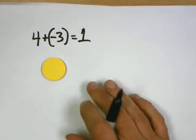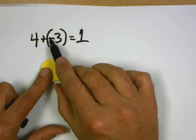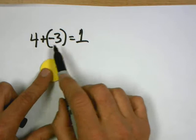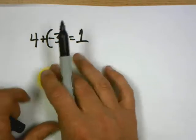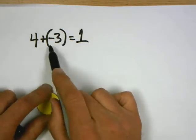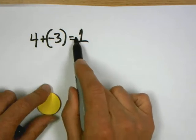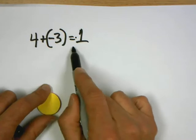We also talked about when the two signs are different, we're adding a positive to a negative or a negative to a positive. The signs have to be different. We can look at the difference. And whichever integer is larger, the positive or the negative, that's going to be the sign of my answer, my sum. So in this case, the positive number is larger, so my answer is going to be positive.